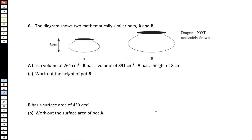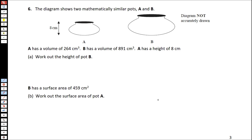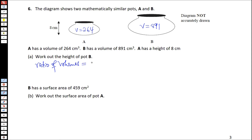Number six. We have two parts that are mathematically similar. Shape A has a volume of 264 and the volume of shape B is 891. We are given the height of A, so work out the height of B. We need to find the ratio of the lengths from the ratio of the volumes. The ratio of the volumes will be equal to 891 over 264, and that equals 3.375.